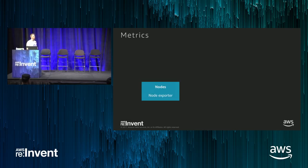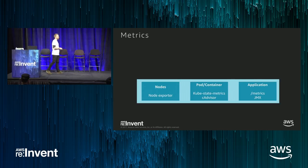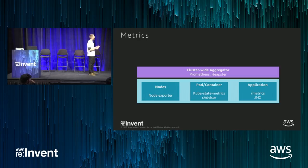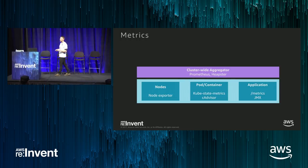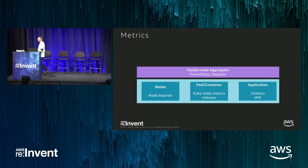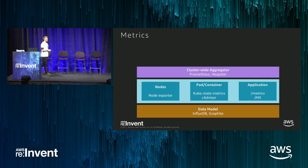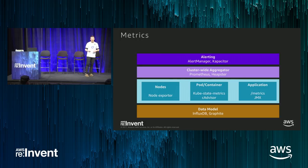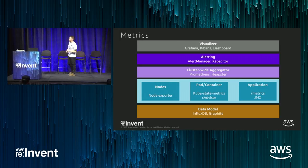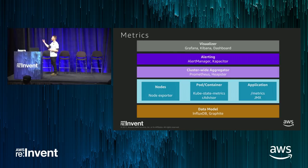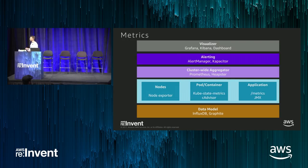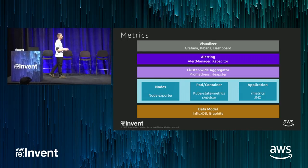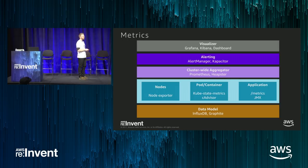On the worker nodes, you can bring whatever you want. There are a lot of options in Kubernetes: for the nodes you can use node exporter; at the pod level you can use Kube state metrics or cAdvisor; for your application you can use the metrics endpoint. You can use the aggregator of your choice — Prometheus is super common as a time series database. You can use various backing databases, alert manager or Capacitor for alerting, and for visualization things like Grafana, Kibana, or the Kubernetes dashboard. Because the worker nodes run in your account, this whole stack is still available to you — bring the open source monitoring tool that works for you.